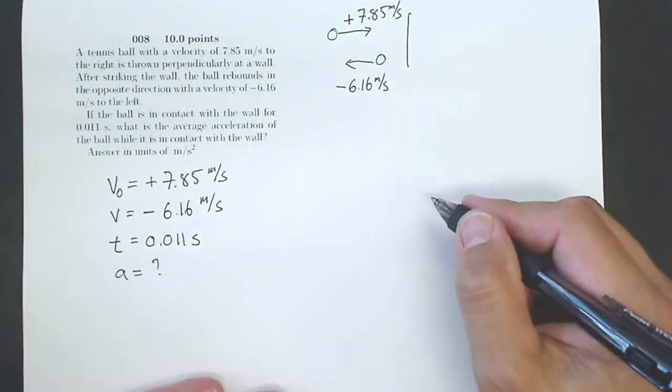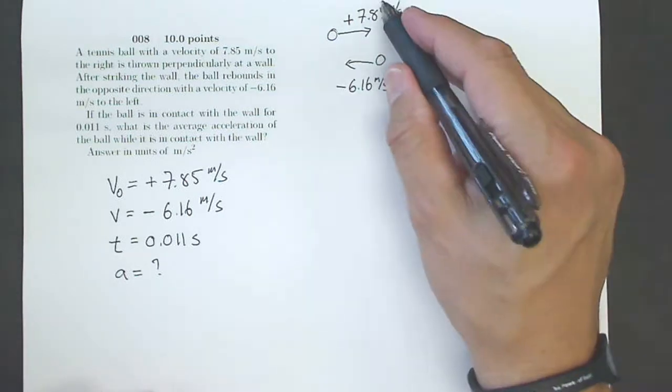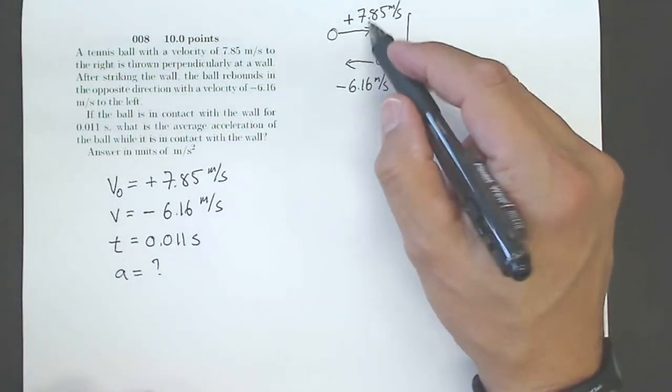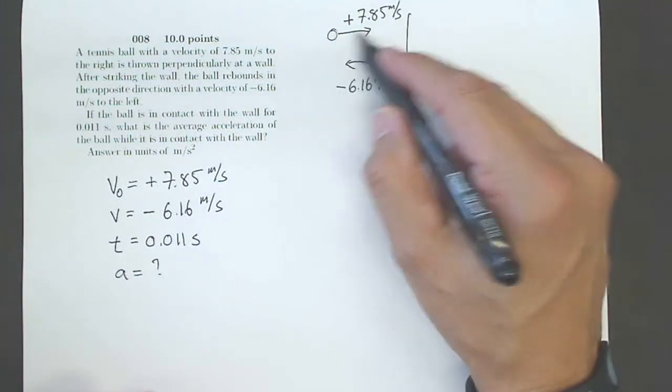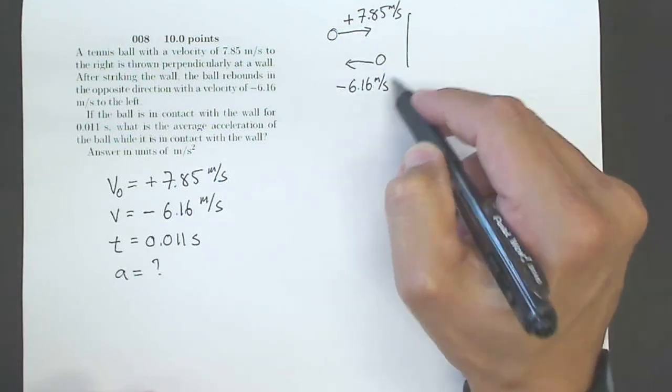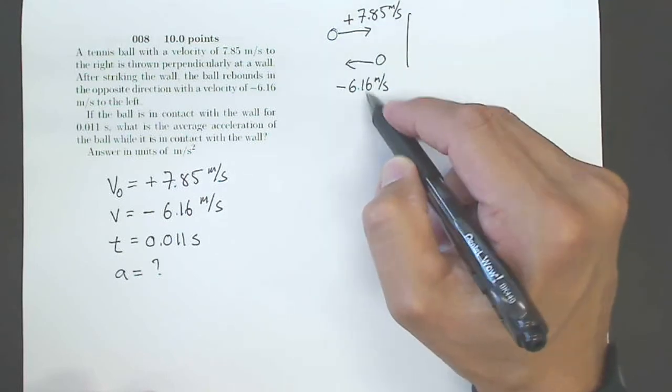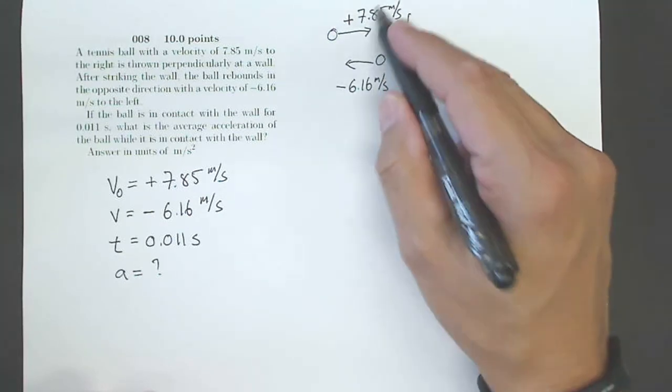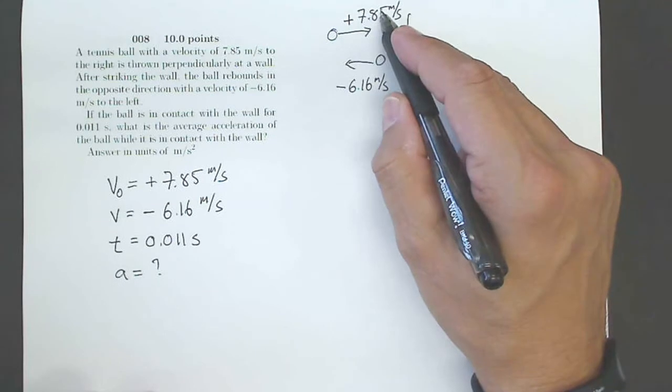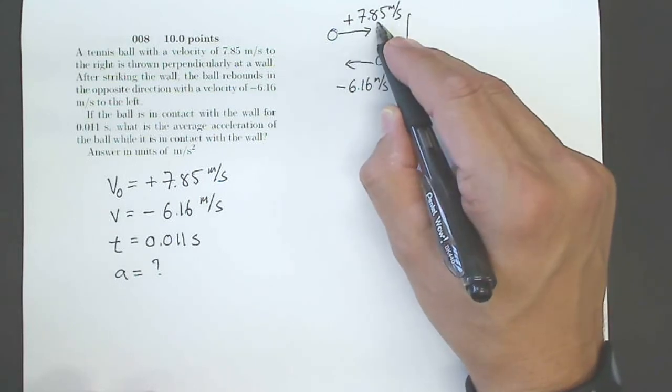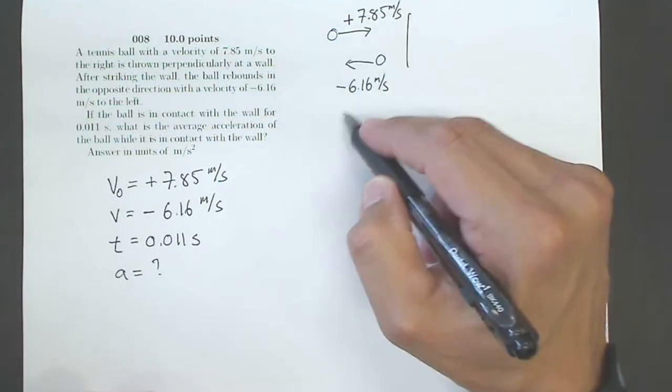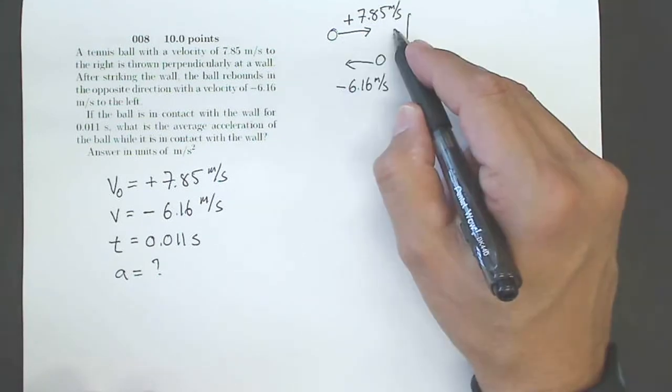Now this is tricky, because how much is this ball changing velocity? It's going from 7.85 in one direction to 6.16 in the other direction. So you might initially think, oh, 7.8, 6.1, that's going to be about 1.6 or so. But if I only change velocity by 1.6, it would still be going to the right at 6.16 meters per second. And that's not the case.